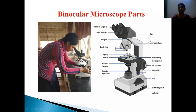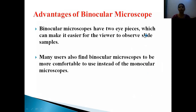This is the carrying handle used to carry the microscope from one place to another. The nosepiece holds the objective lenses, which include 10x, 45x, and 100x magnifications. The upper part is the head, and through the eyepieces we can observe the specimen, making it easier for the viewer to observe slide samples.